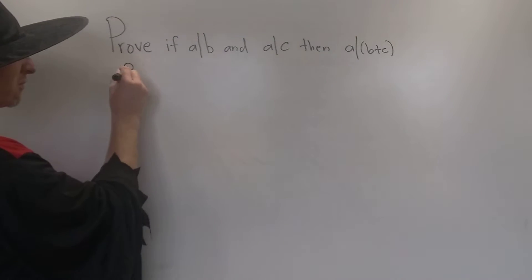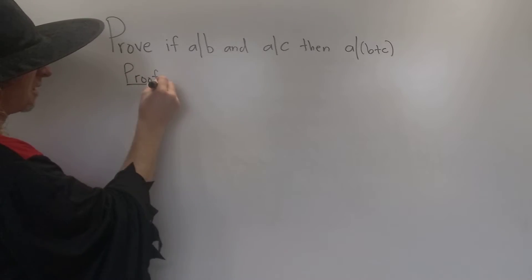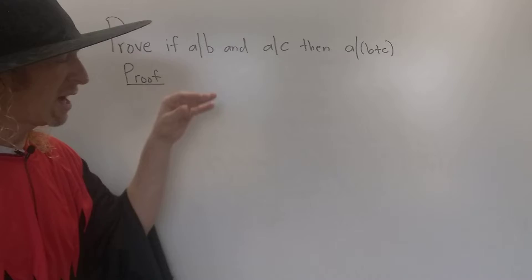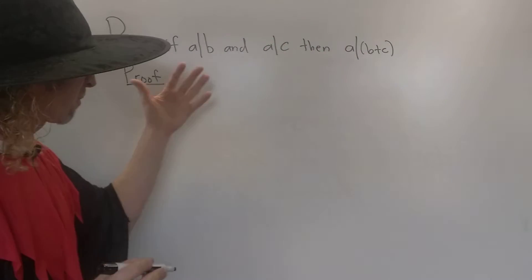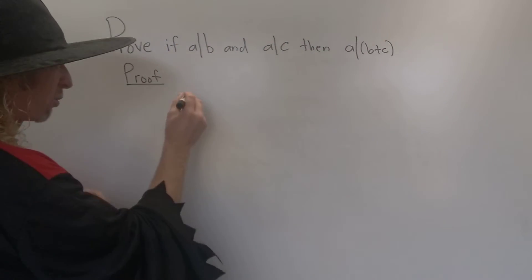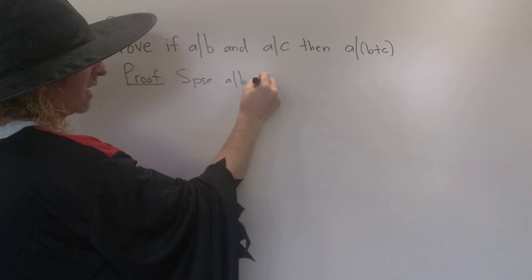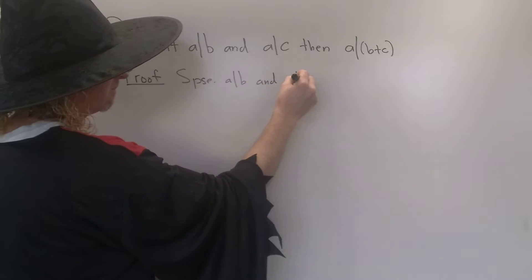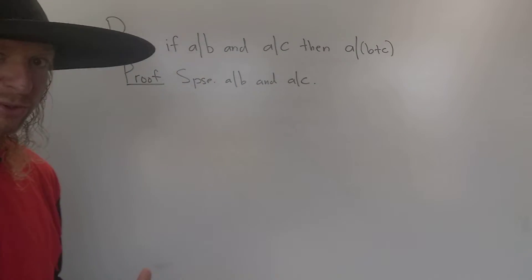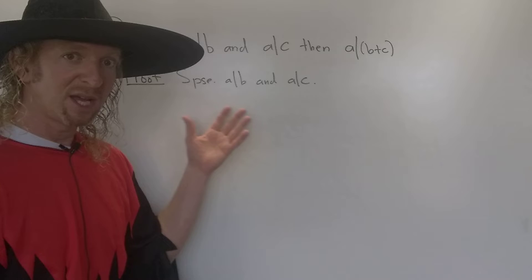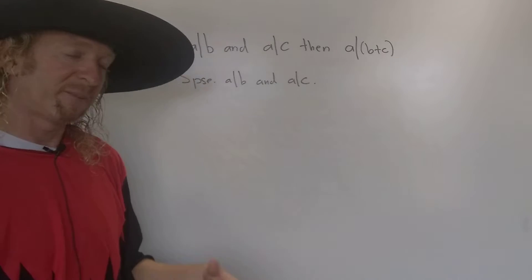Let's go ahead and go through the proof. This is an if-then statement. So we start by assuming this is true, and then we have to show this is true. So we'll write, suppose A divides B and A divides C. So the natural thing to do next is to write down what this actually means. What does it mean for A to divide B, and what does it mean for A to divide C?